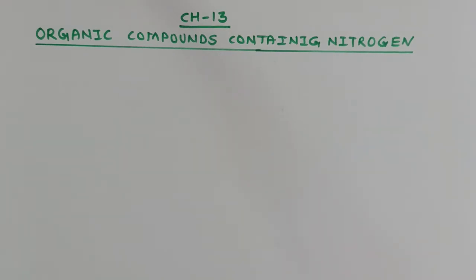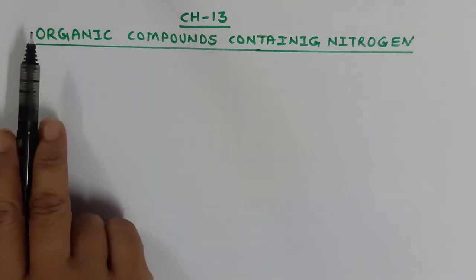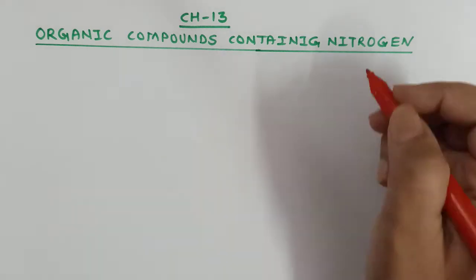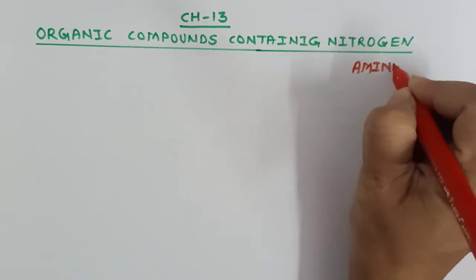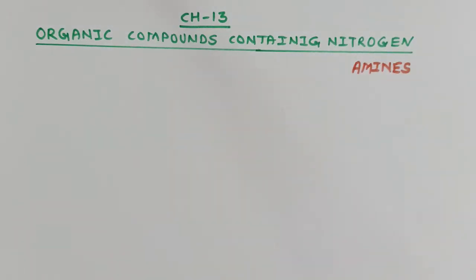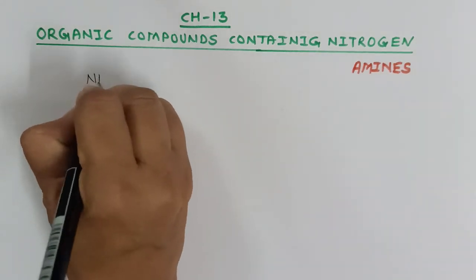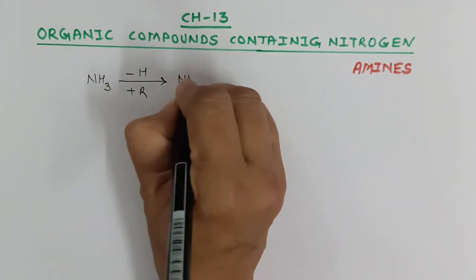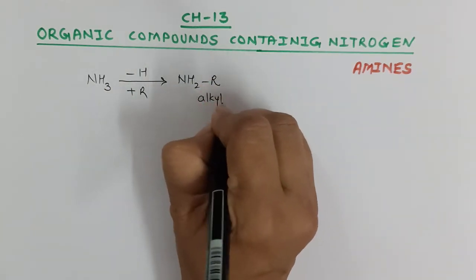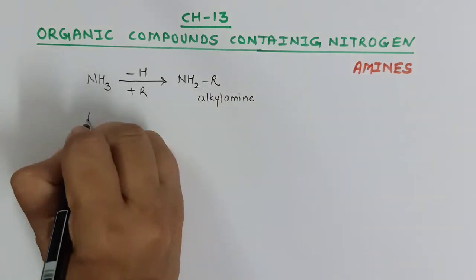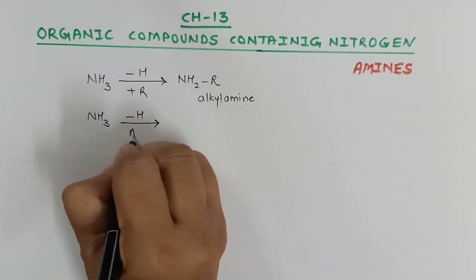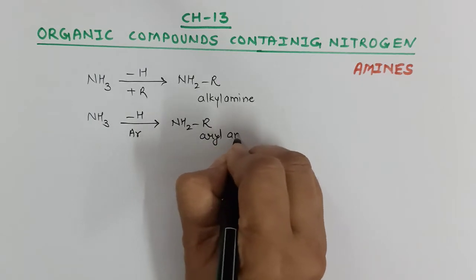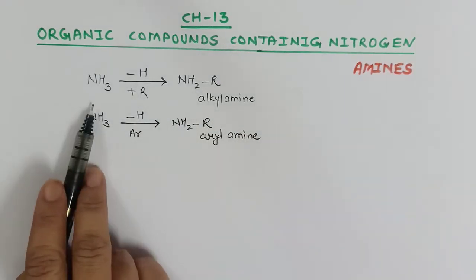Hello dear students, today we are going to start the next chapter of our organic chemistry: organic compounds containing nitrogen. All those organic compounds which contain nitrogen are commonly called amines. They are actually derivatives of ammonia. When one hydrogen in ammonia is replaced by any alkyl group, we get alkyl amine; if replaced by an aromatic group, we get aryl amine.